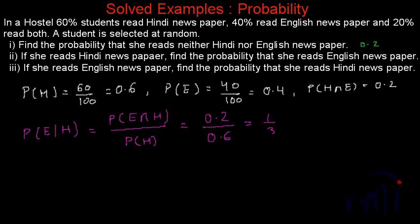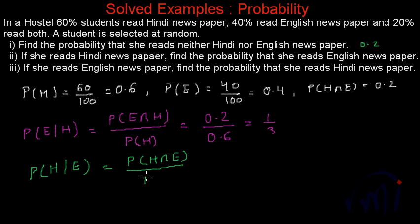For the third part, if she reads English newspaper, find the probability that she reads Hindi newspaper also. That means we have to find P(H|E), the probability of a student reading Hindi newspaper given that she reads English newspaper. This equals P(H∩E) divided by P(E), which is 0.2 divided by 0.4, giving us 1 by 2.